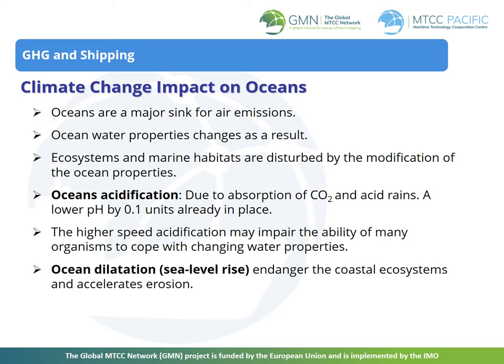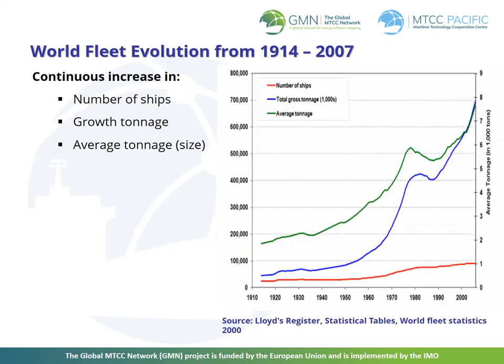The present rate of increase in ocean acidification has no precedent over the last 30 million years. The high-speed acidification may impair the ability of many organisms to cope with changing oceanic properties. Around 90% of world trade is carried by the international shipping industry. Without shipping, the import and export of goods for a modern and globalized world would not be possible. International shipping trade continues to expand, bringing benefits for producers and consumers across the world through competitive freight costs. There are over 50,000 merchant ships trading internationally, transporting every kind of cargo.